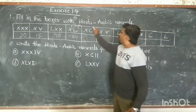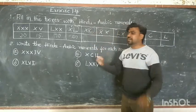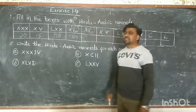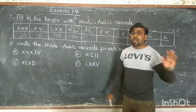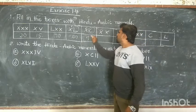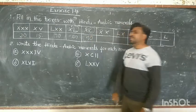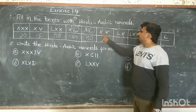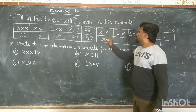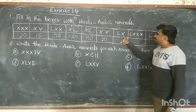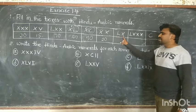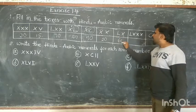You already know that C means 100. Reverse: XC. X before C means subtract 10 from 100 — that is 90. Then XX is 20. LX is 50 plus 10, that is 60.